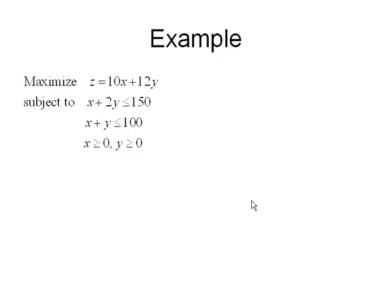Let's do one more example. Let's maximize z equals 10x plus 12y subject to the constraints x plus 2y less than or equal to 150, x plus y less than or equal to 100, and x greater than or equal to 0, y greater than or equal to 0.